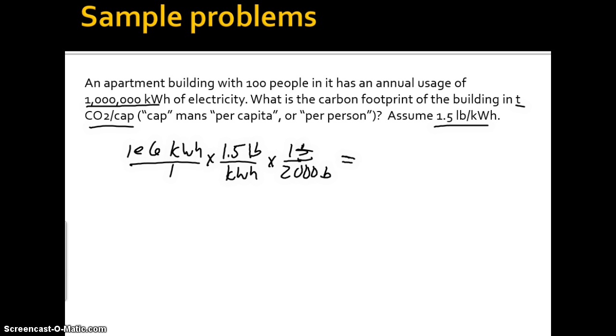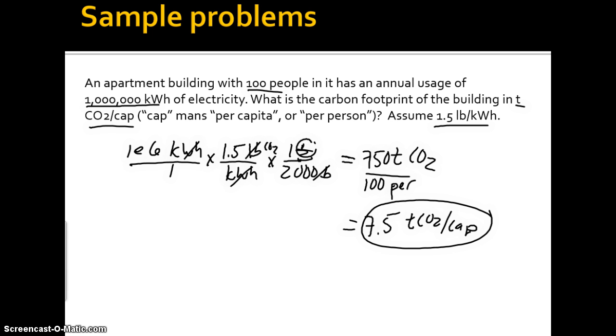So if we cancel out here, pounds, pounds, pounds. So we're left with tons. So that's going to be 750 tons of CO2. And we have 100 people. So we divide that by 100 people. 100 persons. And we end up with 7.5 tons of CO2 per person or per capita. So there is your per capita.